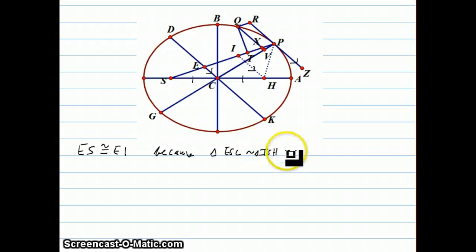Since SC is half of SH, all the sides are half. So that means that ES is half of EI, which means that ES and EI are equal to each other.